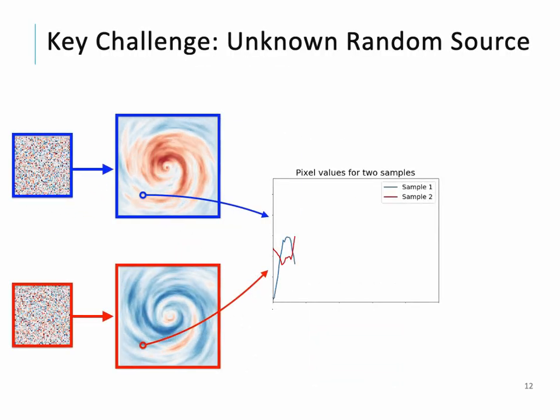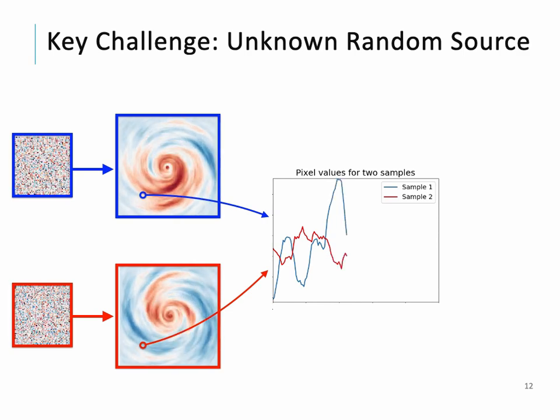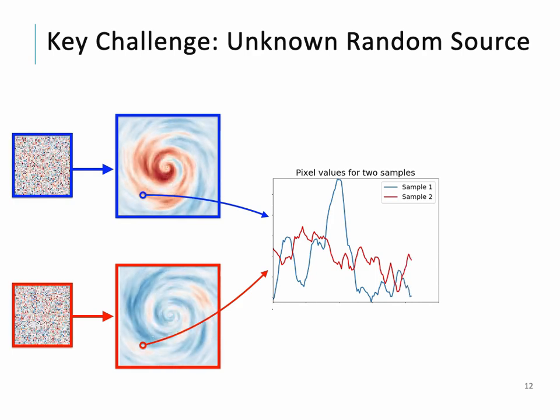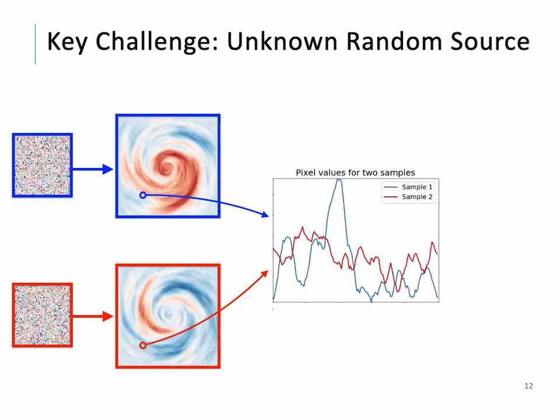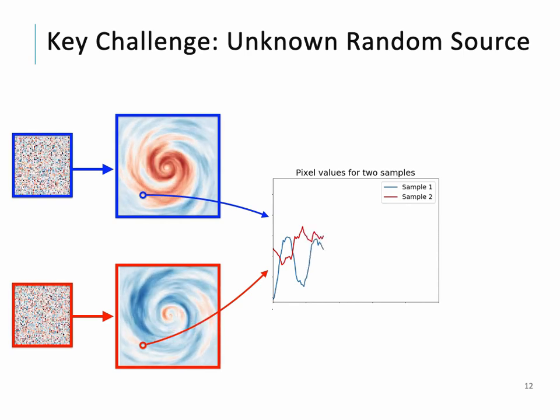A key challenge to estimating the dynamics is that pixel values are driven by an unknown random source, which we do not want to estimate. This means that two random fields with the same underlying parameters result in very different measurements over time.